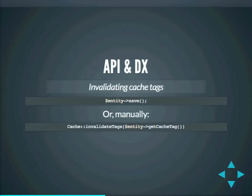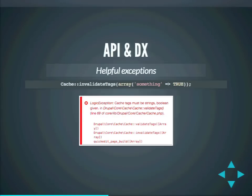For invalidation, you could call invalidateTags manually, passing in a set of cache tags. But in general you will never need to do this, because invoking the save method on any entity — or modifying an entity in the UI — already takes care of cache tag invalidation for you. In terms of DX, we provide explicit exceptions: if you try to pass in anything other than a string, it will tell you exactly what you passed in, so you can spot errors right away.